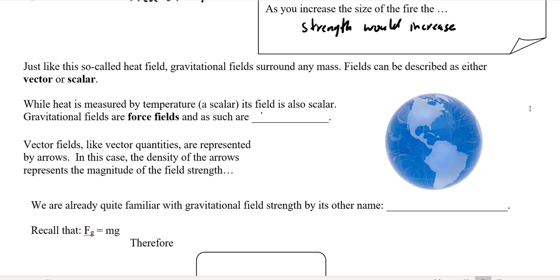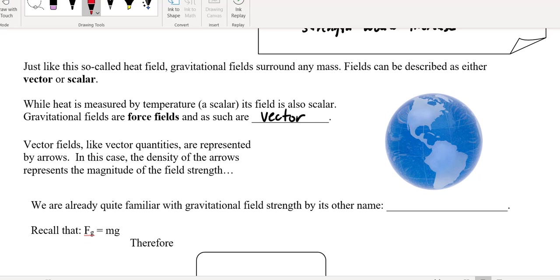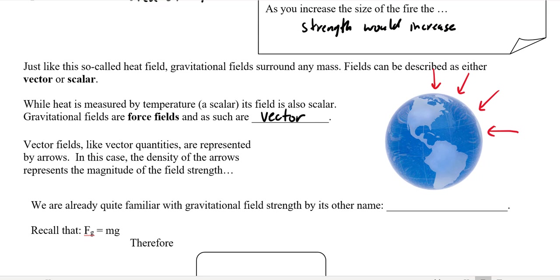A gravitational field is a force field, which means it is a vector — an area surrounding an object that also has a direction. We don't really think about the direction of gravitational fields all that much because gravity always works to attract. Gravity is a little strange in that it always attracts — it's always going to work towards the object. For now, things are nice and simple.